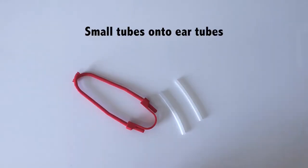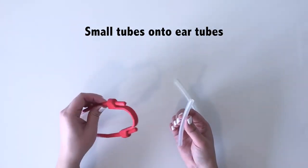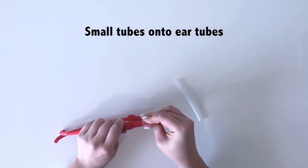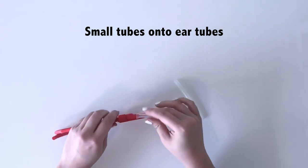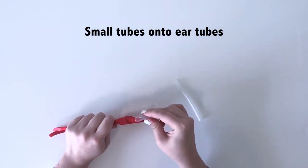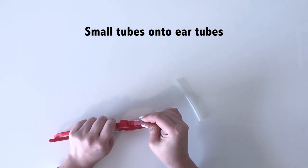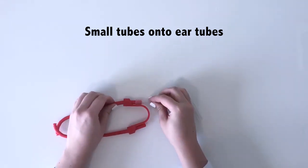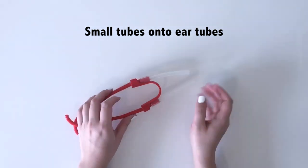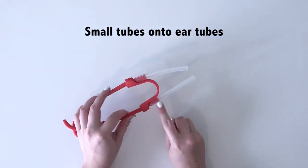Next, push the small tubes onto the bottom of the ear tubes. There can be some resistance, so you may need to apply more pressure. This is the most time-consuming step of the process. When you're done, the tube should be approximately 2 cm high on the ear tubes.